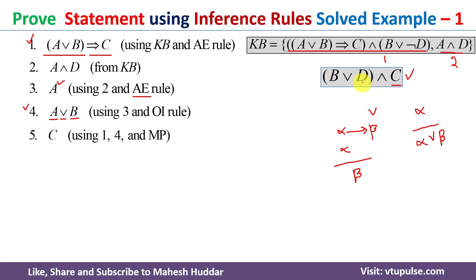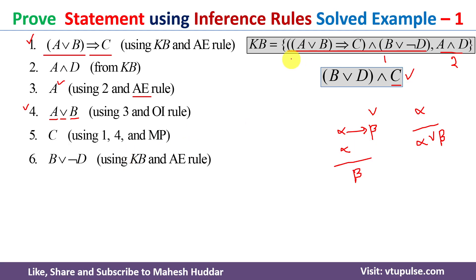Now another thing required is B or D. To get D, we can easily extract it from the second knowledge base where A and D is present, so I will get D. But to get B, I will take 'B or negation of D' from the first knowledge base by eliminating the 'and', and it will look like: from knowledge base 1, I eliminated the 'and' and got 'B or negation of D'.